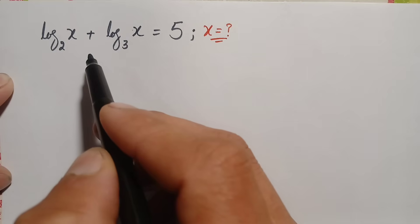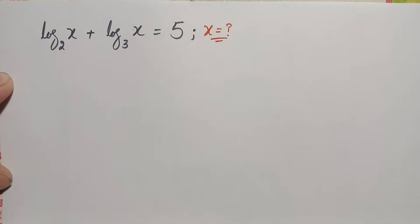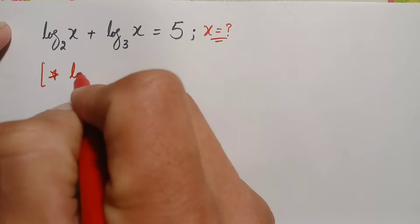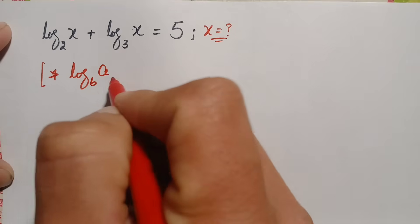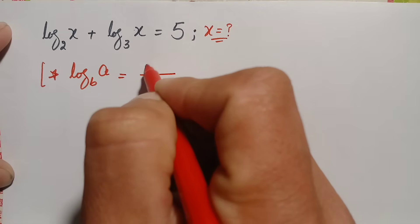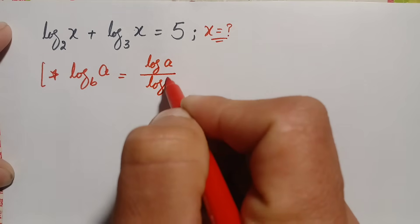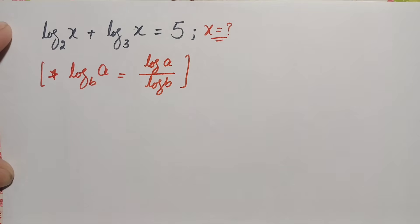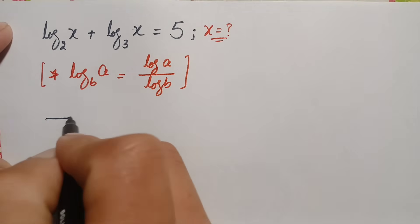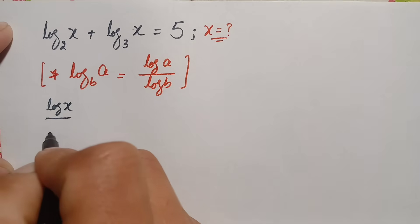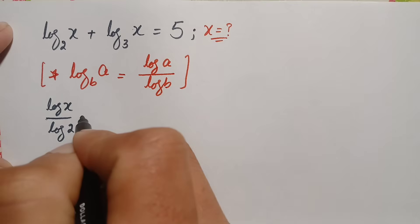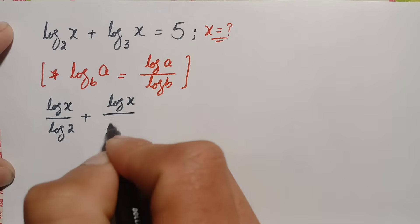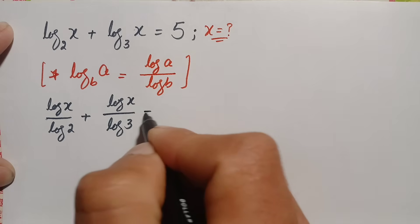In the left hand side, in both terms, we will use a logarithm result. We can write log of a with base b as log of a divided by log of b. Using this result, the left hand side becomes log of x divided by log of 2, plus log of x divided by log of 3, is equal to 5.